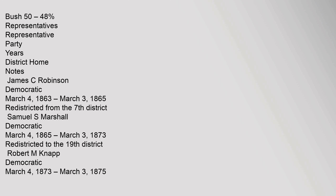Representatives: James C. Robinson, Democratic, March 4, 1863 to March 3, 1865 — redistricted from the 7th District. Samuel S. Marshall, Democratic, March 4, 1865 to March 3, 1873 — redistricted to the 19th District. Robert M. Knapp, Democratic, March 4, 1873 to March 3, 1875.